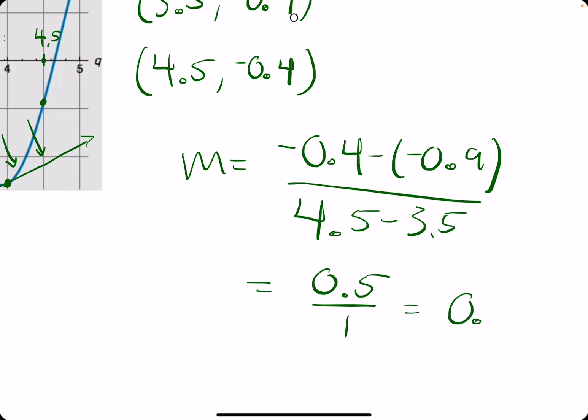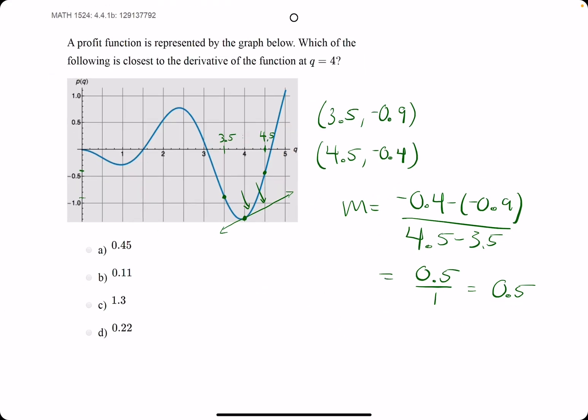We're going to find the slope that's closest to 0.5, and we get option A.